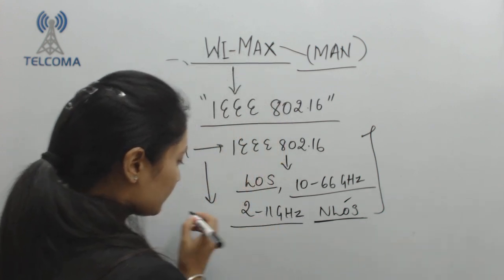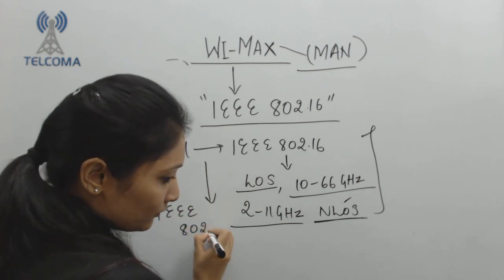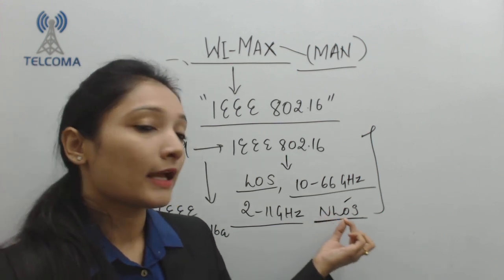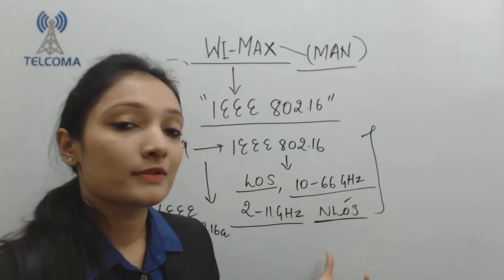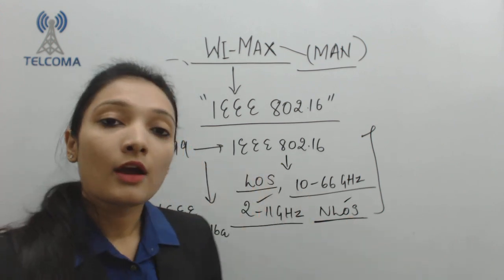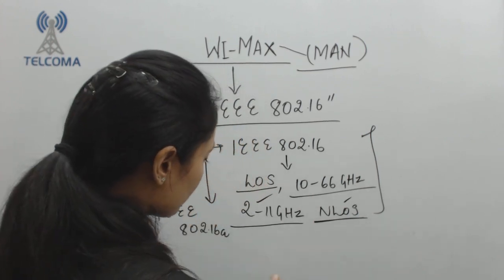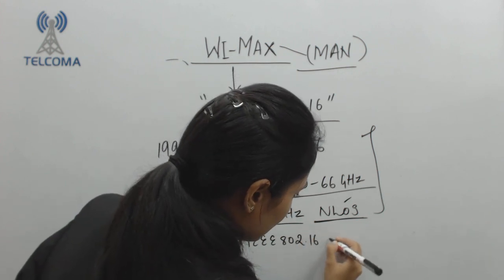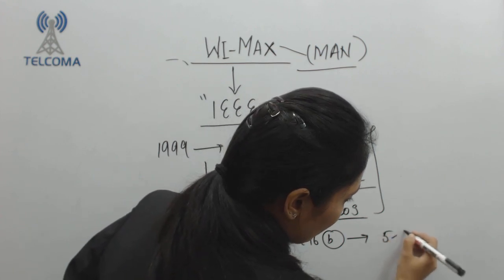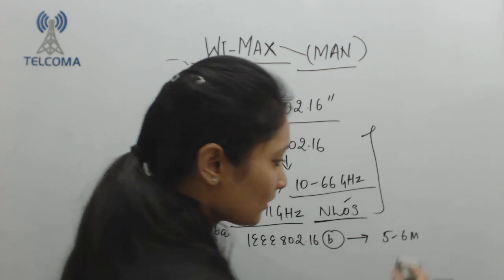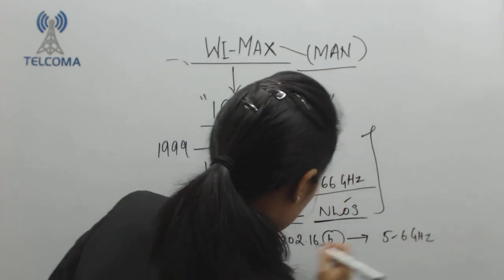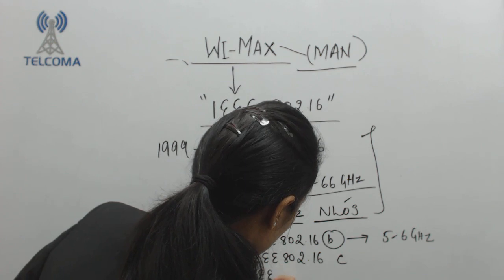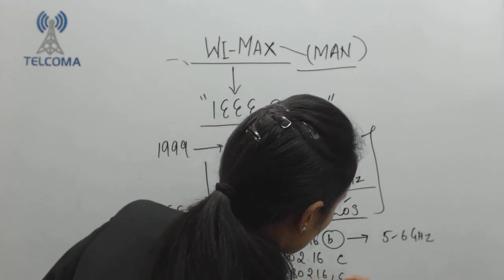That is why focus shifted to IEEE 802.16a, which has an operating frequency range of 2 to 11 GHz and is designed for non-line-of-sight operation. Since users are scattered, this operational range was adopted for WiMAX. We also have IEEE 802.16b with a functional range of 5 to 6 GHz, and then IEEE 802.16c and IEEE 802.16d.